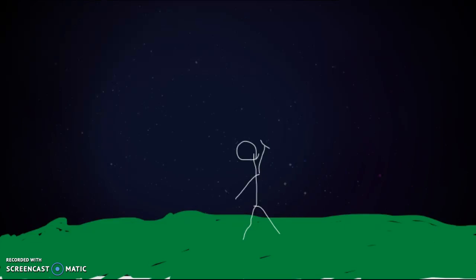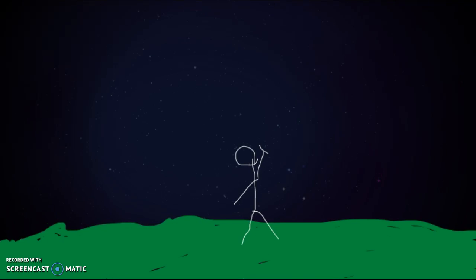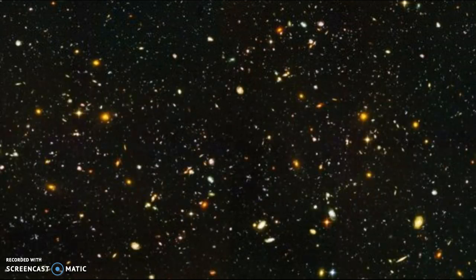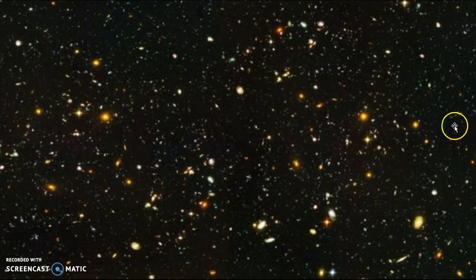Because if you went outside in the night and you held a pen up from arm's length and you looked at the tip of the pen, that's how much of the universe, that's the part of the universe that the Hubble Space Telescope captured. That much. And the whole night sky, only that much. That's huge, so many galaxies.